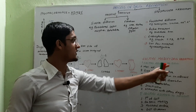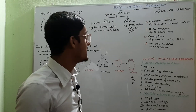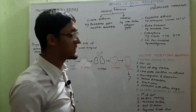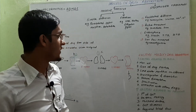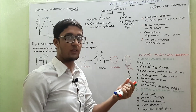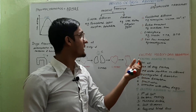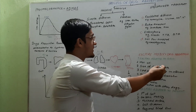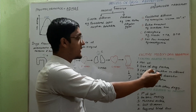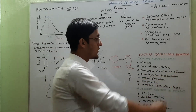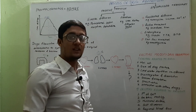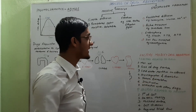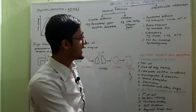Now I am going to discuss factors modifying drug absorption. They are broadly divided into two categories: factors related to the drug and factors related to the patient. Drug-related factors include: molecular weight — if high, rate of absorption is low, and vice versa; for example, heparin has low molecular weight so absorption is rapid, whereas insulin has high molecular weight so absorption is slow. Particle size — smaller particle size means more rapid absorption. Lipid-water partition coefficient — higher coefficient means higher absorption rate. Disintegration and dissolution — capsules are already disintegrated, so only dissolution occurs, making absorption faster than tablets.